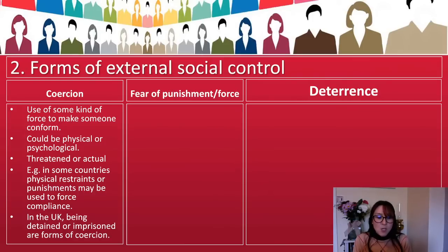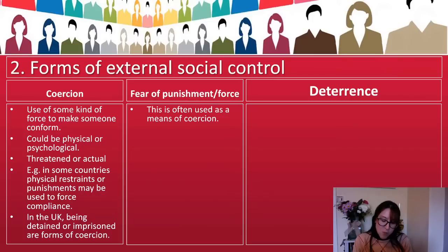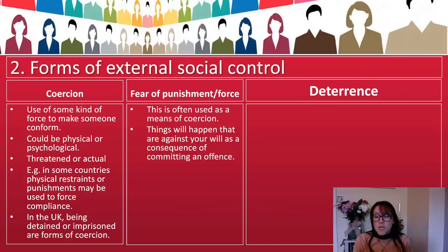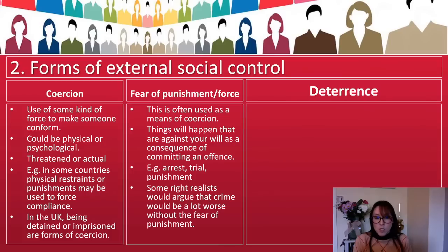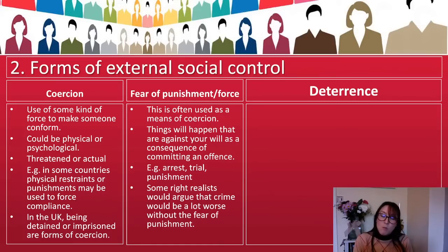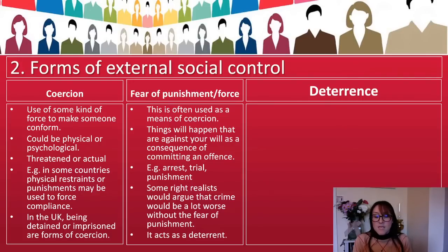Fear of punishment is kind of the offspring of coercion itself — it's often used as a means of coercion. Things will happen that are against your will as a consequence of committing an offence: arrested, put on trial, punished. Some right realists — a synoptic link to Unit 2 — would argue that crime would be a lot worse without the fear of punishment, and that more people would commit crimes if they didn't fear it. This also acts as a deterrent.